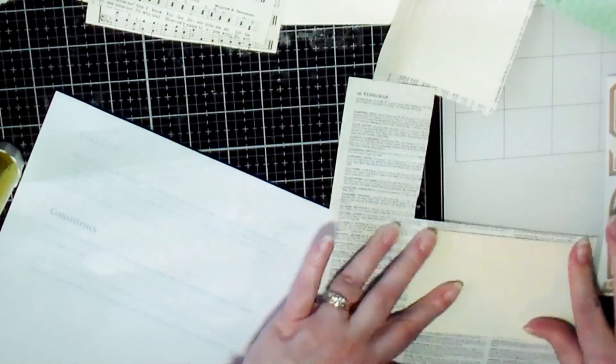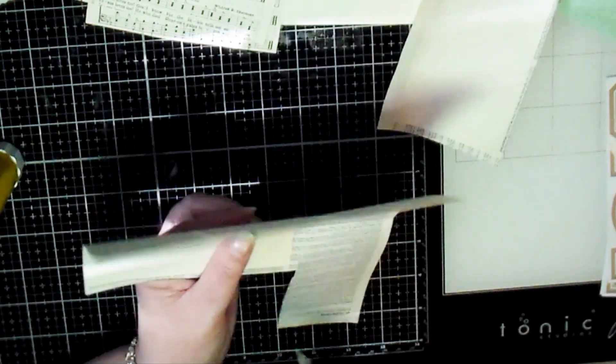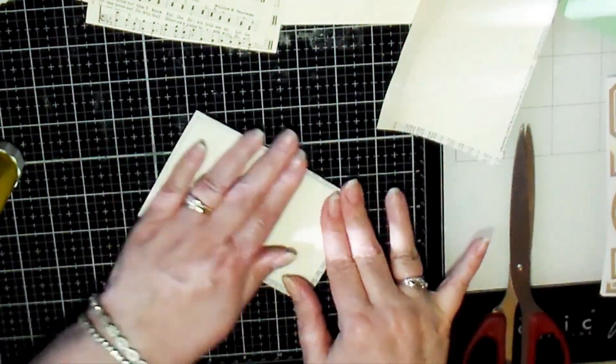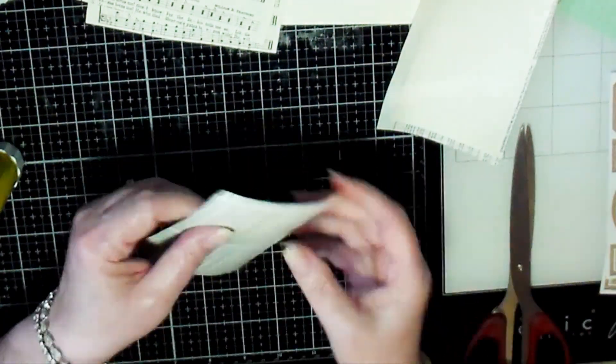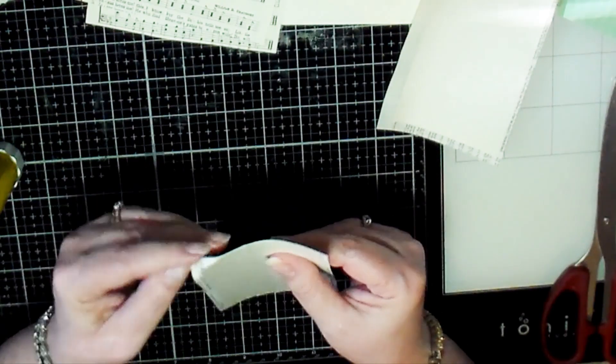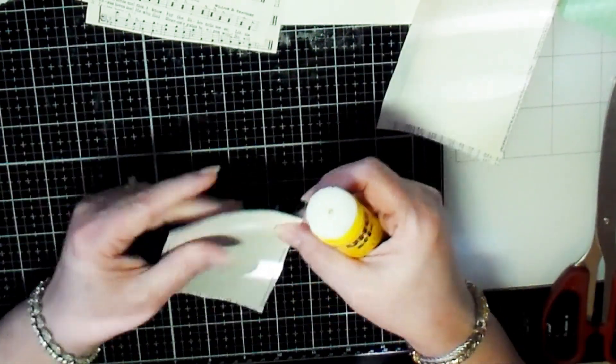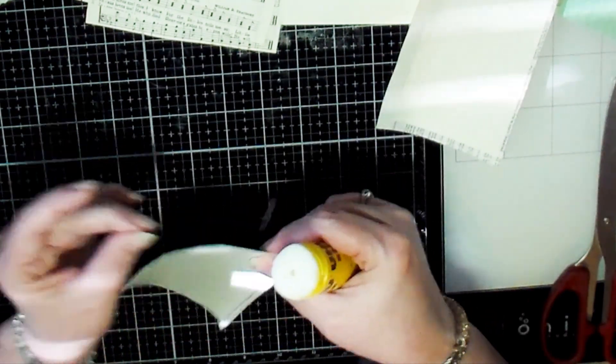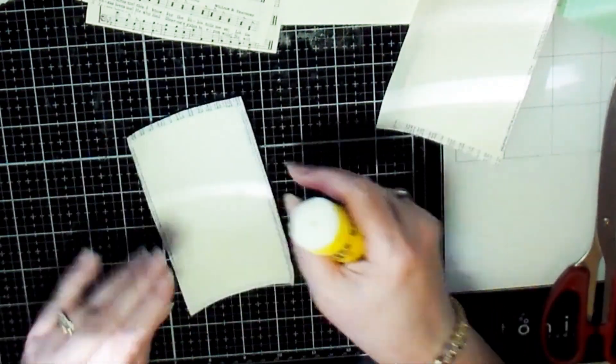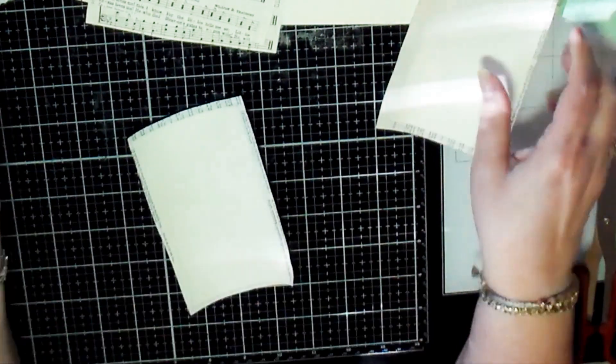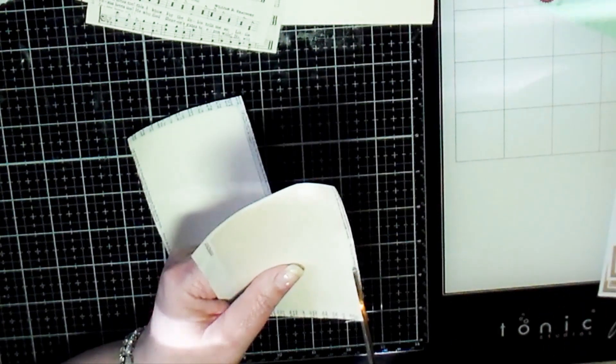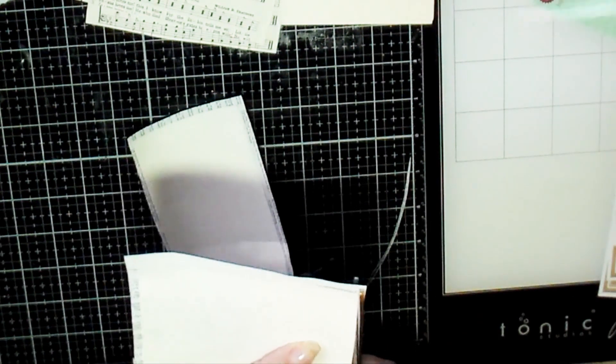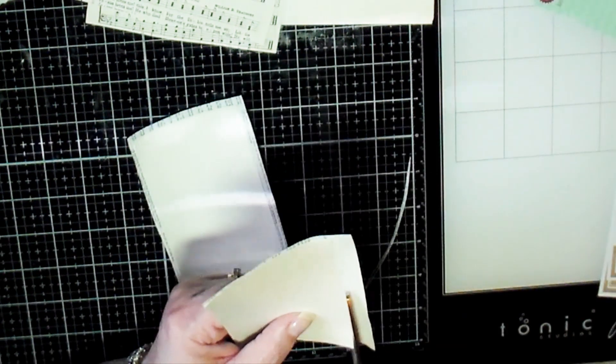So here I decided to do two of them on music paper and two of them just on some text paper. I believe this was a page from a dictionary that I'm gluing to these cards to make pockets for this junk journal that I've been working on. I've been having a lot of fun playing around with all of this.